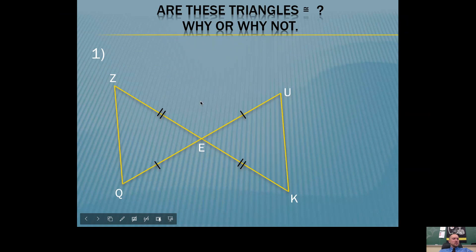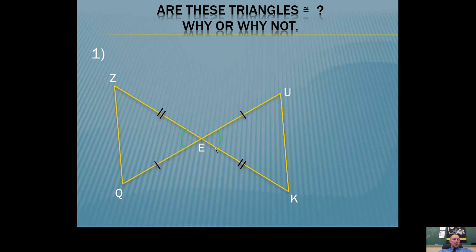Are these triangles congruent? Why or why not? I see a pair of congruent sides and a second pair of congruent sides. That's all they give you — however, there are vertical angles here. Do not forget about the things you're supposed to know, like vertical angles. Vertical angles give you congruent angles in between the congruent sides, so these triangles are congruent by Side Angle Side: two pairs of congruent sides with an included angle congruent.